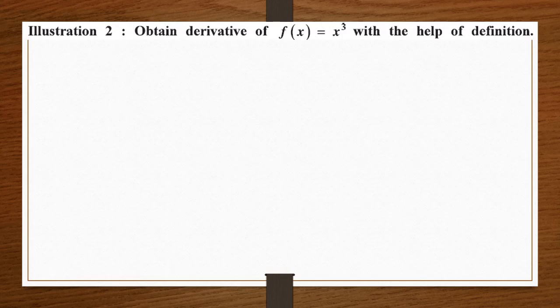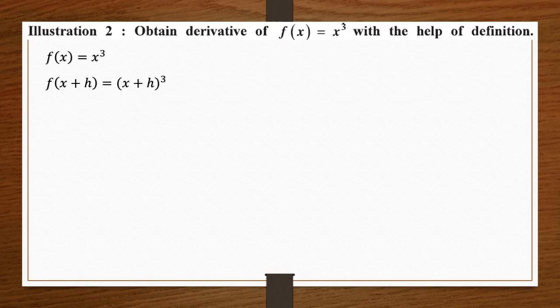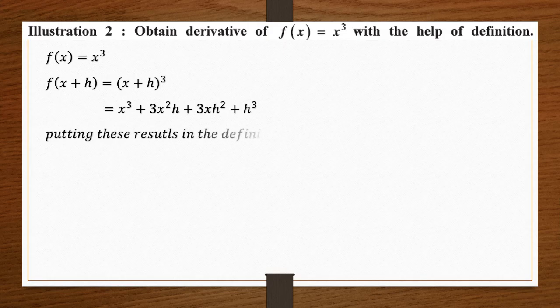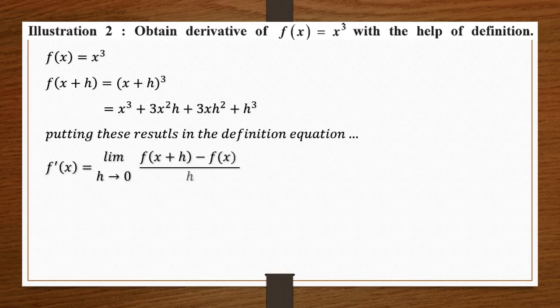Moving to Illustration 2: we have to obtain the derivative of f(x) = x³ with the help of the definition. First, f(x) = x³. Next, f(x+h) = (x+h)³. We need to expand this using the algebraic expansion studied in earlier classes, giving us x³ + 3x²h + 3xh² + h³. We then put these two values into the definition equation and write down f'(x).